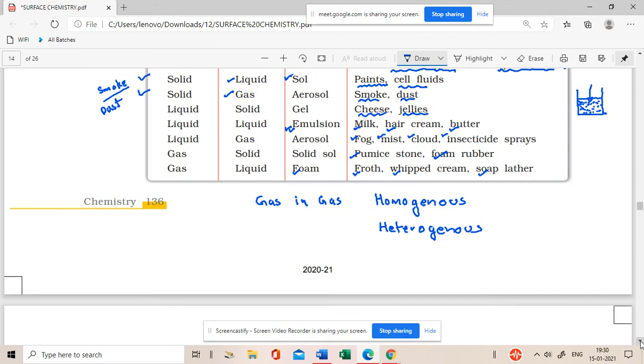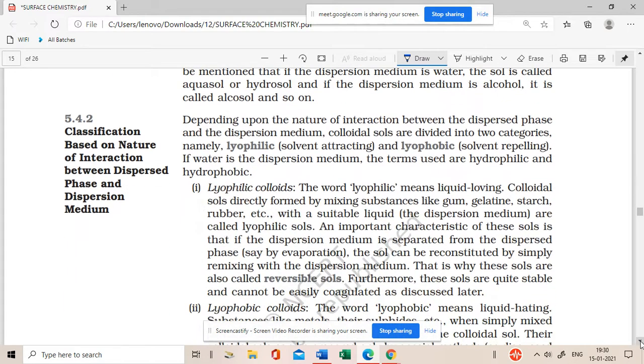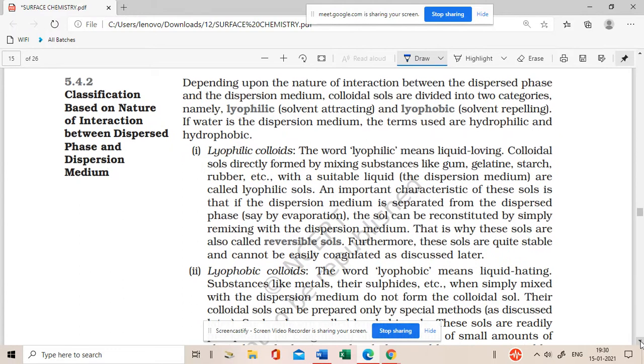Now, we come to the second classification. The nature of interaction between dispersed phase and dispersing medium. We get two types of colloids - one is lyophilic, one is lyophobic. Philic means love, phobic means hate or fear. So lyophilic colloids are colloids which love the liquid. Lyophobic colloids, they hate the liquid. So if they hate the liquid, they do not want to come in the dispersed phase easily.